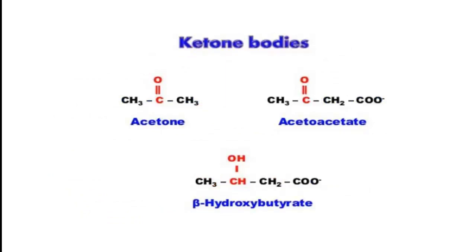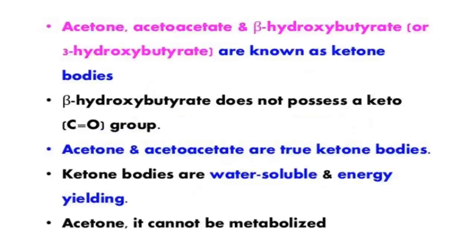Basically there are three ketone bodies: acetone, acetoacetate, and beta-hydroxybutyrate. From the structure, acetone and acetoacetate both contain a keto group, whereas beta-hydroxybutyrate does not contain any keto group. So beta-hydroxybutyrate is not truly a ketone, but it is derived from ketone bodies. Acetone, acetoacetate, and beta-hydroxybutyrate are all known as ketone bodies, though beta-hydroxybutyrate does not possess a keto group.